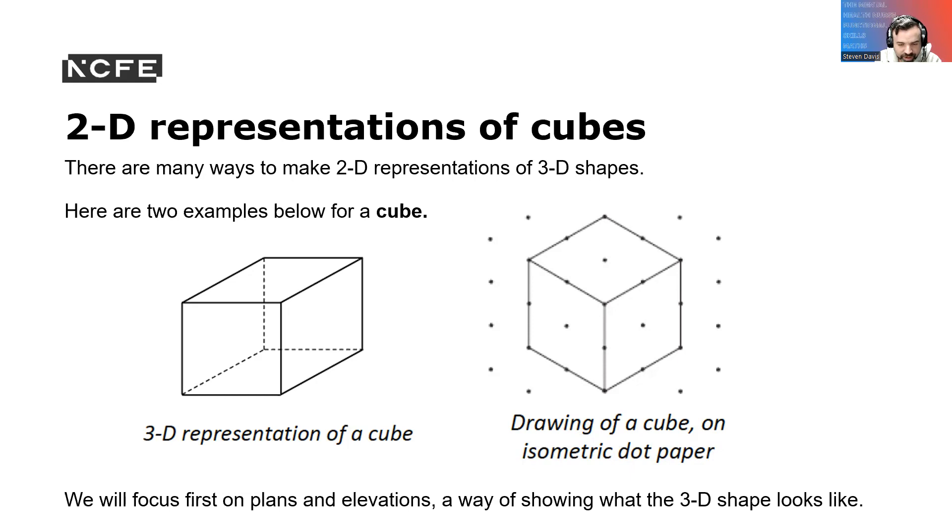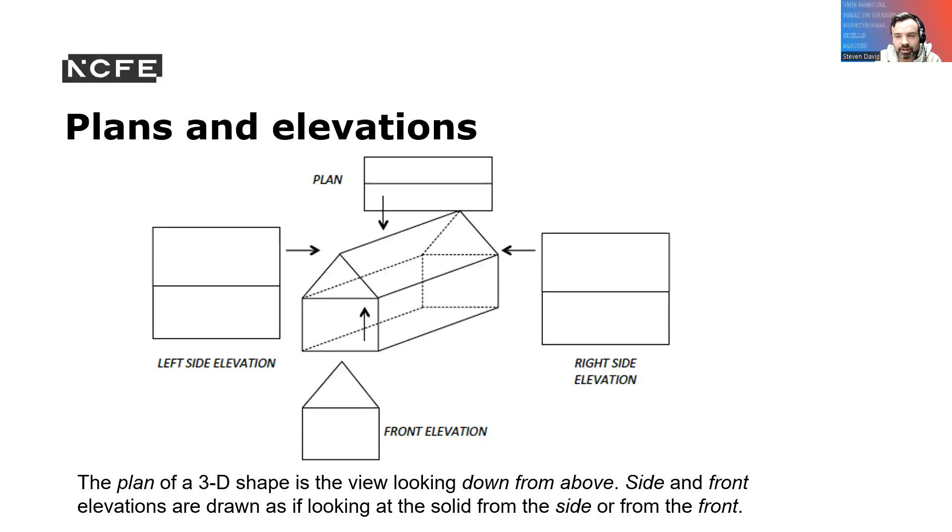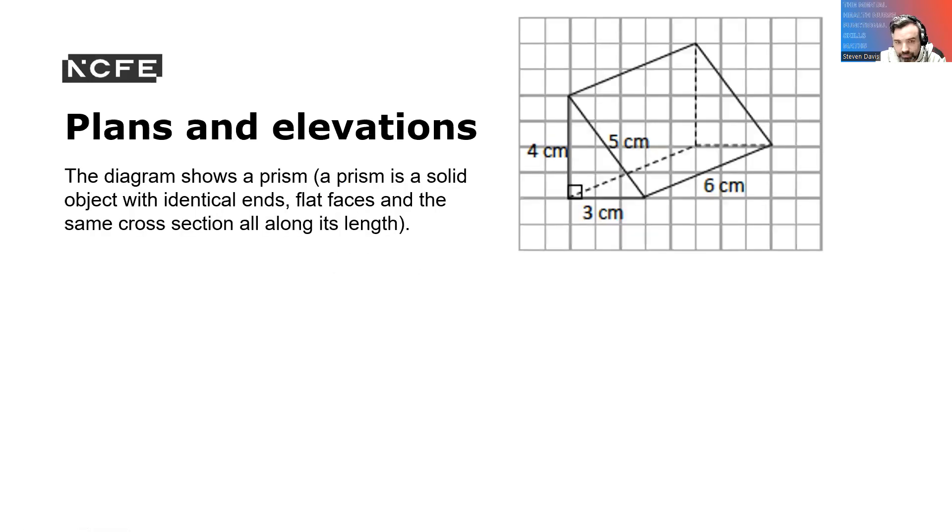We will focus first on plans and elevations, ways of showing what 3D shapes look like. You've got your left side, your right side, your top, the front and back. The plan of a 3D shape is the view looking down from above. Elevation drawings are as if looking from the solid from the side or from the front.